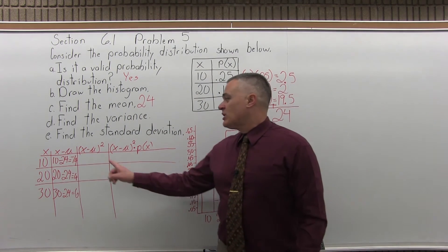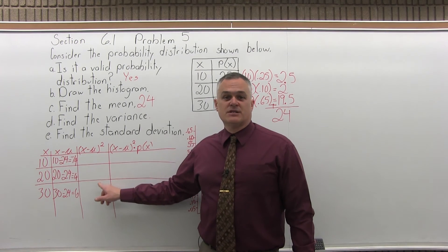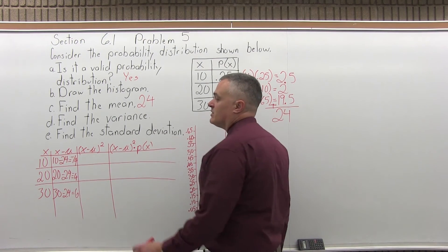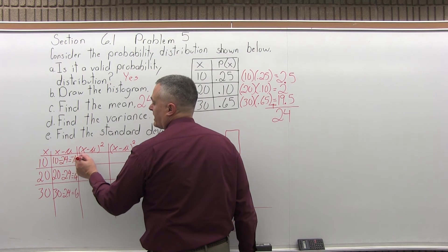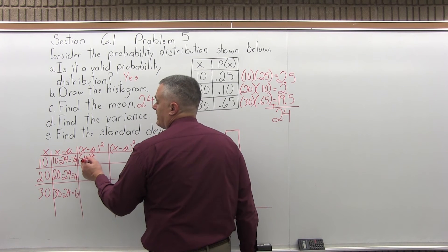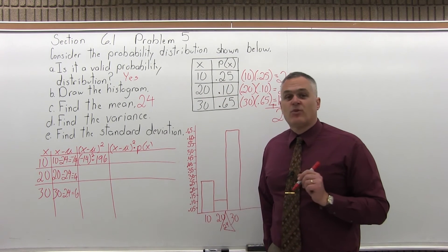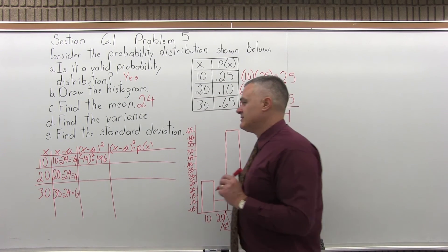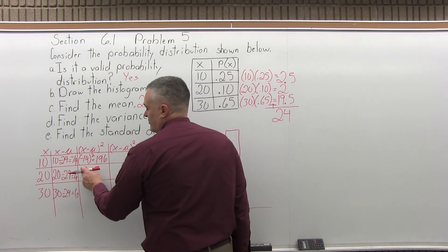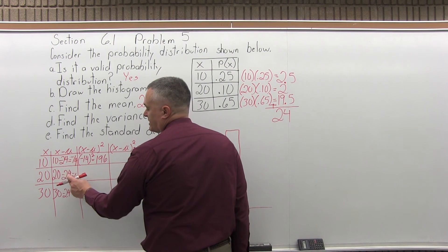So now the next column over, what you're going to do is raise those values to the second power. So x minus mu in the top row is negative 14. So the next column, you'll do negative 14, second power. Negative 14 times negative 14 is positive 196. Then the next row down, the middle row, the previous column, the x minus mu, gave me a result of negative 4.